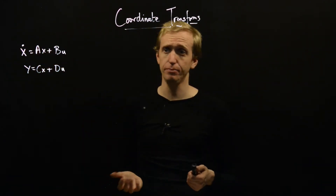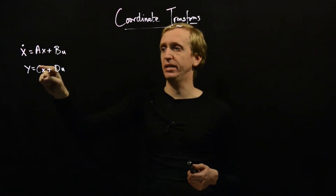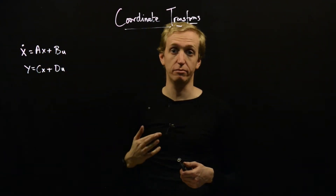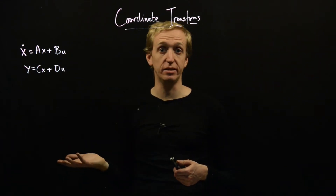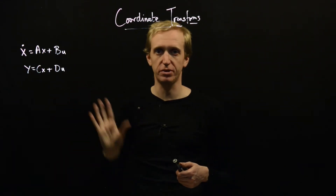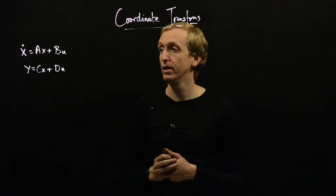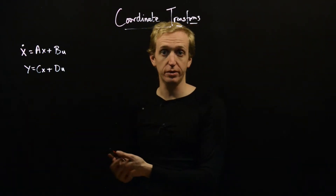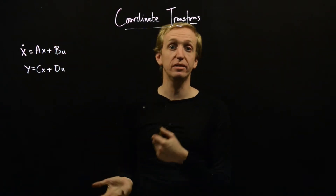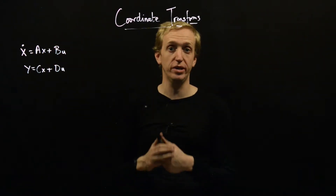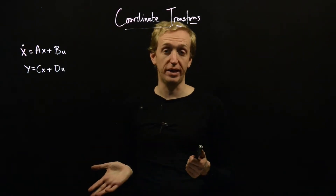So what does this choice let us do? It lets us manipulate matrices A, B, C and D. We can pick a new state that's related to the original state — there are some restrictions on how we can do that — and in these new coordinates, the state-space model might have A, B, C and D matrices with nicer structure in them. We already saw an example of that.